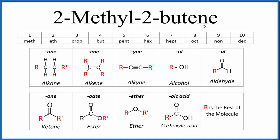First thing you'll notice, it ends in E-N-E. So E-N-E, that means we're going to have an alkene. We're going to have a double bond between two of the carbons.